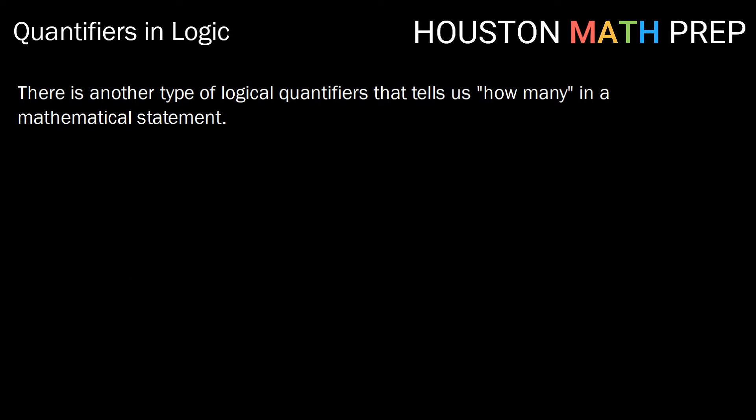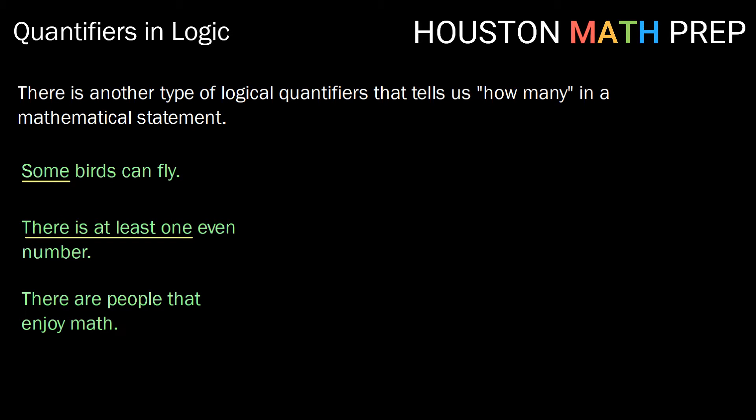We do have another type of logical quantifier that still tells us how many. And instead of being all or every, it is kind of the opposite of that. Like some birds can fly. So here, some is our quantifier. There is at least one even number. In that statement, there is at least one is our quantifier. There are people that enjoy math, believe it or not. In that one, there are is our quantifier.